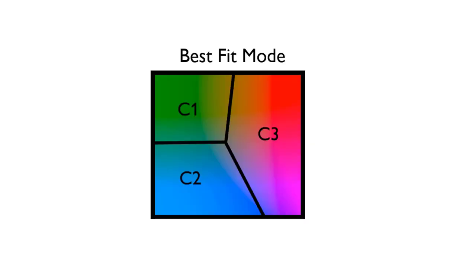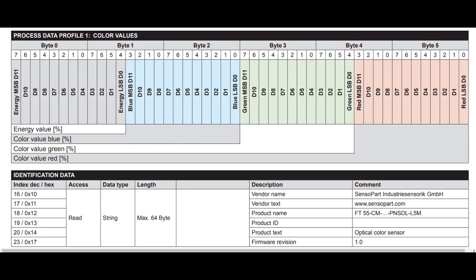When you have really close colors and have to use best fit mode, the sensor will always output one of the taught colors as a found color. And if you have a specification tolerance for a color, obviously that won't work. But you can combine the best of both methods by using the sensor in best fit mode and then sending the data out IO-Link into your PLC.